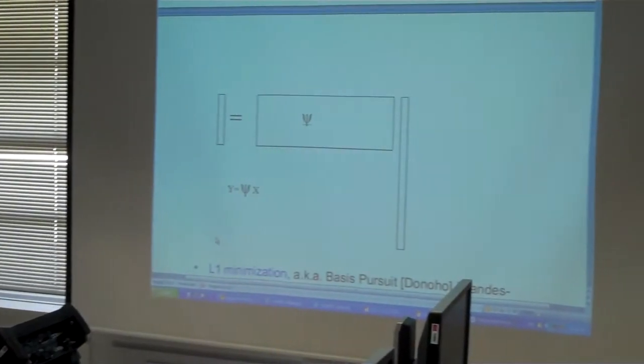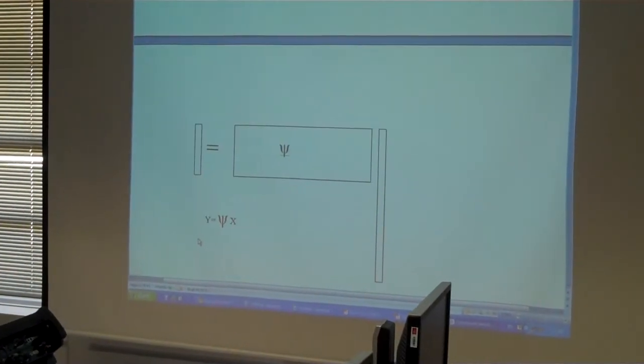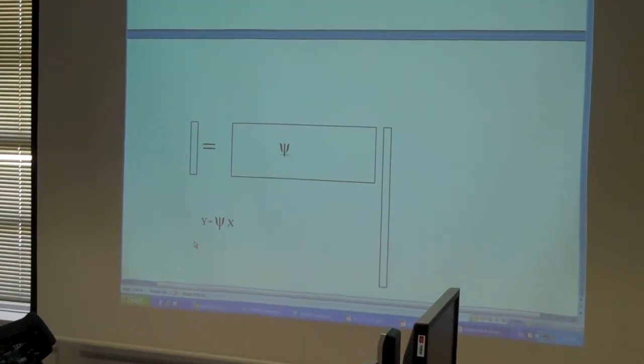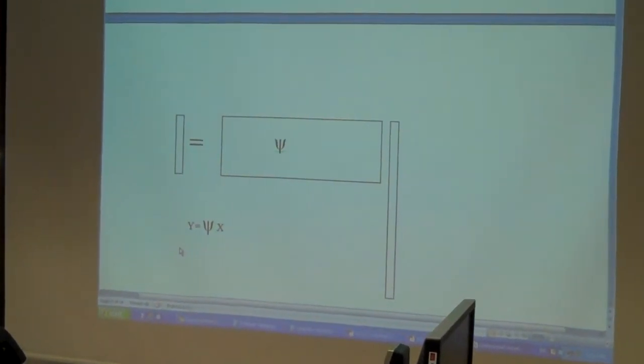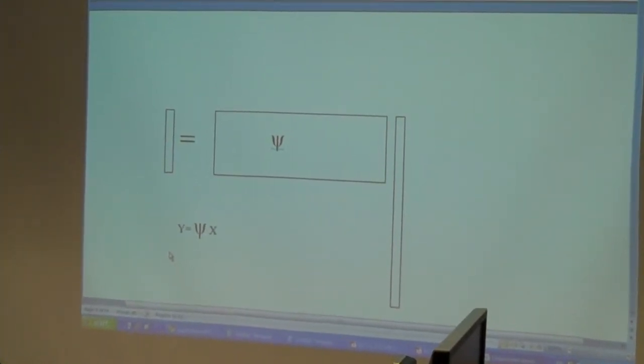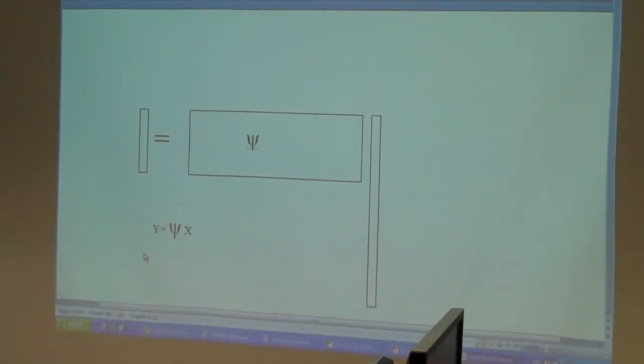I want to say about the compressive sensing theory and what compressive sensing says. We have an observation like y is psi, a bar on the left, and we have psi as a matrix. It's random. Maybe we don't have any constraints on this matrix.